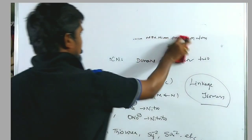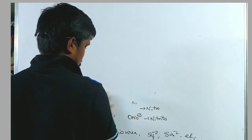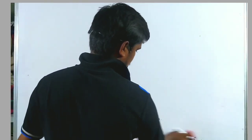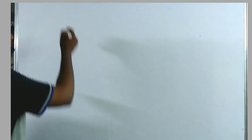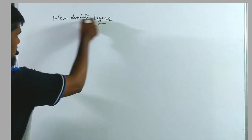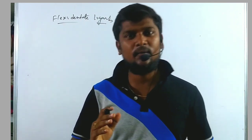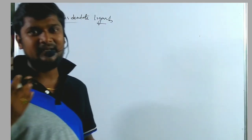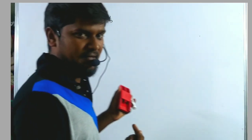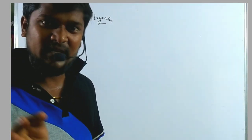The second classification is flexidentate ligands. Flexidentate means it is flexible. A ligand which shows more than one denticity — like monodentate, bidentate, tridentate, tetradentate, penta, hexa — such ligands having different denticity are known as flexidentate ligands. Sometimes it acts as monodentate, sometimes it acts as bidentate.